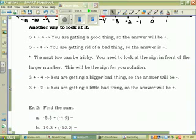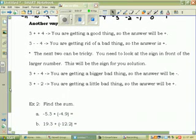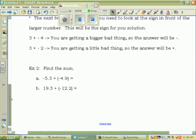The next two can be tricky. You need to look at the sign in front of the larger number. This will be the sign for your solution. So we have 3 plus a negative 4. You're getting something bad. Good thing or a bad thing? Bad. If the sign in front of the larger number is negative, it stays negative. If the sign in front of the larger number is positive, your answer is positive. Does that make sense to you guys?